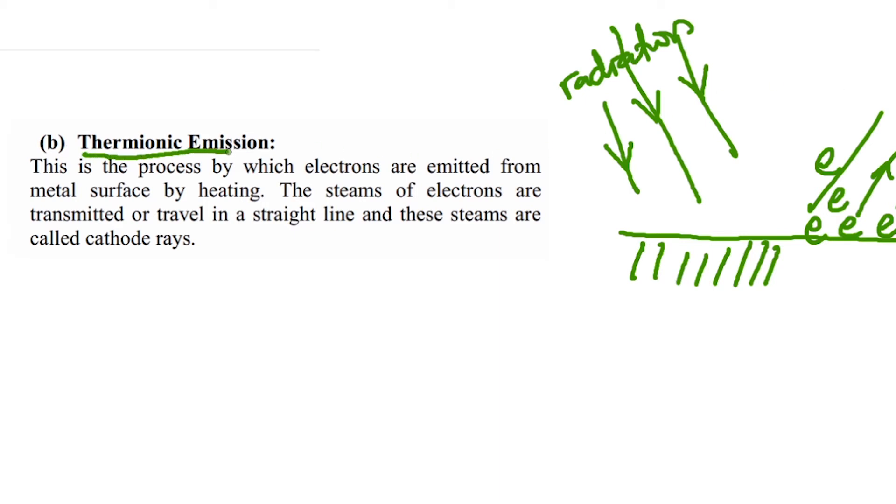Thermionic emission, as you can see, is still involving electrons being emitted. But what's the difference here? The difference is that these electrons are emitted not by radiation, but rather by heat.